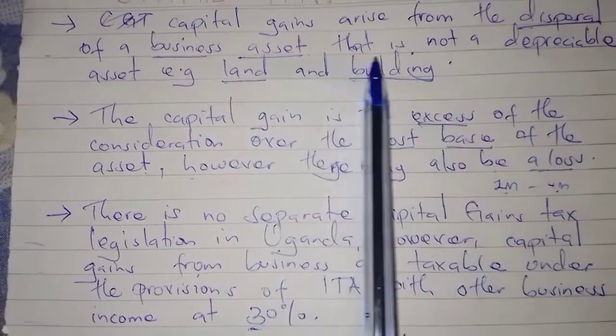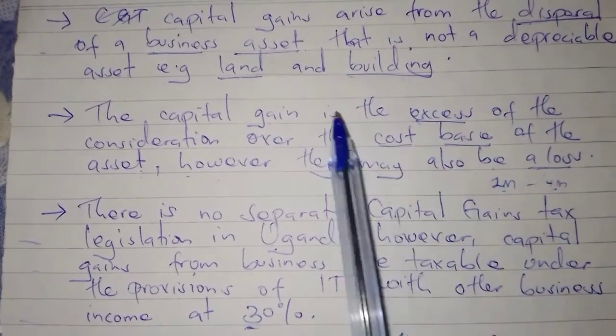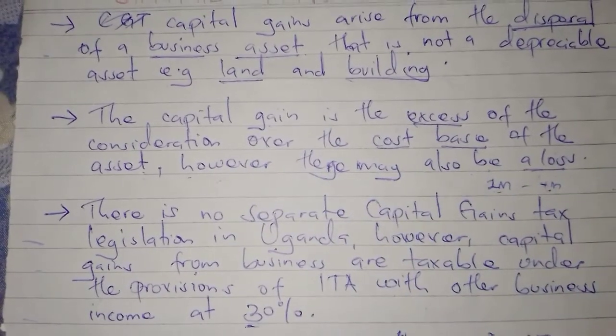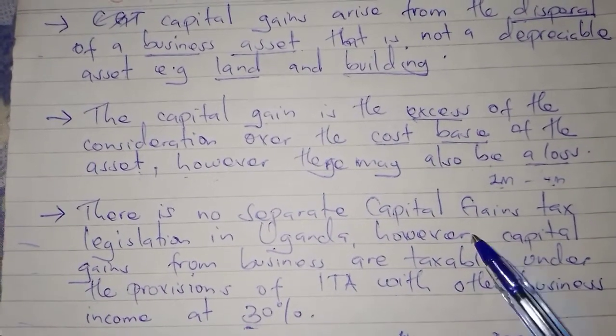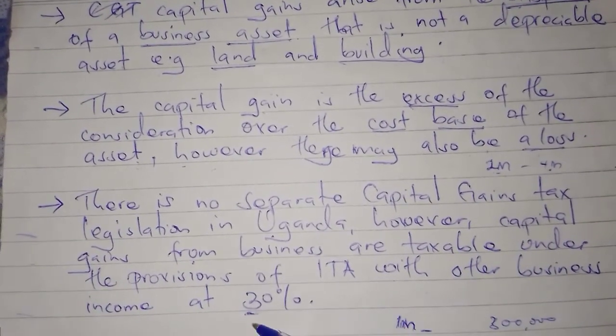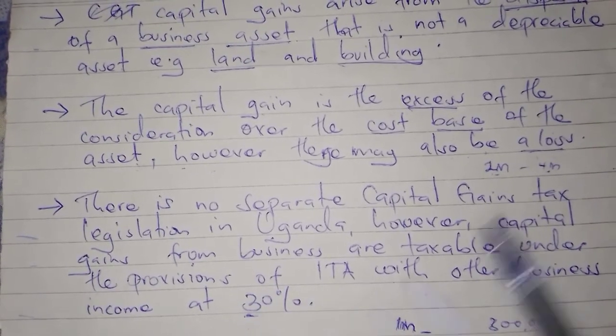In summary, capital gains tax arises on the disposal of a business asset. It is the excess of the consideration over the cost base of the asset, and there can also be a capital loss. The gain is taxed at a rate of 30%.